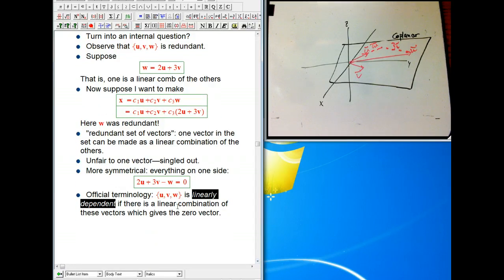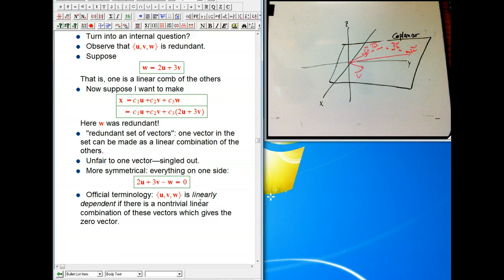So what we say is that, and here's the official terminology, and this is our replacement for the vague terminology redundant, we say that this set u, v, and w is linearly dependent if there is a linear combination of these vectors which gives the zero vector. But here's one problem. No matter what three vectors I give you, I can always find a linear combination of those that gives a zero vector. I claim that it is not hard to make the zero vector. And the reason is I could pick all the coefficients to be zero. So what I need is one crucial word, nontrivial linear combination of these vectors which gives the zero vector.